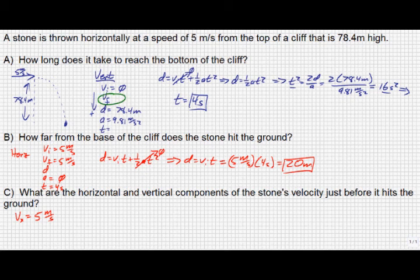Vf vertically. To do that, we can use vf equals vi plus at. Which is going to be equal to 9.81 meters per second squared times 4 seconds. Or right around 39.2 meters per second. So v in the vertical direction is 39.2 meters per second.